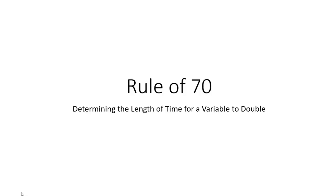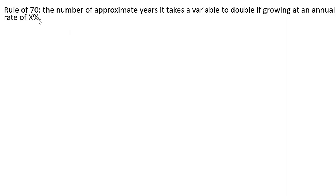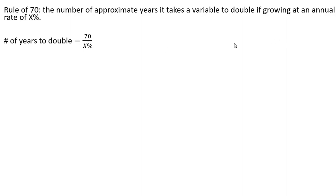Hello, in this video I'm going to look at the rule of 70, determining the length of time for a variable to double. The rule of 70 is the number of approximate years it takes a variable to double if growing at an annual rate of x percent. Here's the formula: the number of years to double is going to be 70 divided by the percent growth rate.